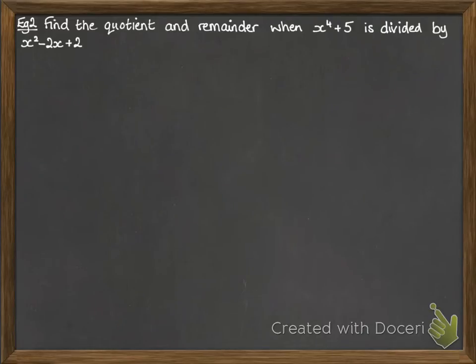Now, next example. Find the quotient and remainder when x to the power of 4 plus 5 is divided by x squared minus 2x plus 2. So let's set up our long division. Now, the first problem is that we don't have any terms of x after the x to the power of 4 and we need them to be able to set up our columns properly. So you add them in as 0s. So we've got a 0x cubed, a 0x squared, a 0x and then our plus 5. And you'll see why it will become obvious as we work through.